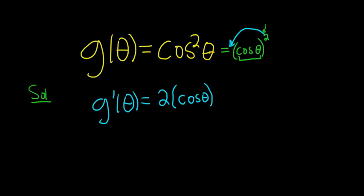Then you subtract 1. 2 minus 1 is 1, times, and then you multiply by the derivative of your inside function. So the derivative of cosine is negative sine.